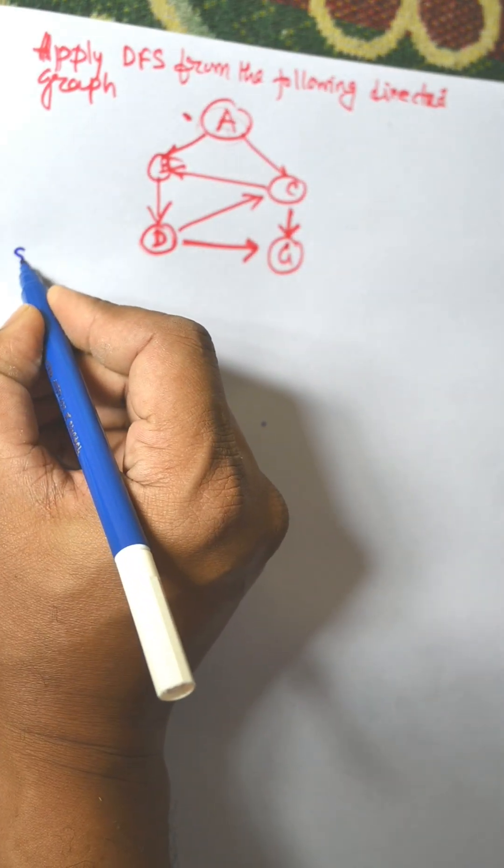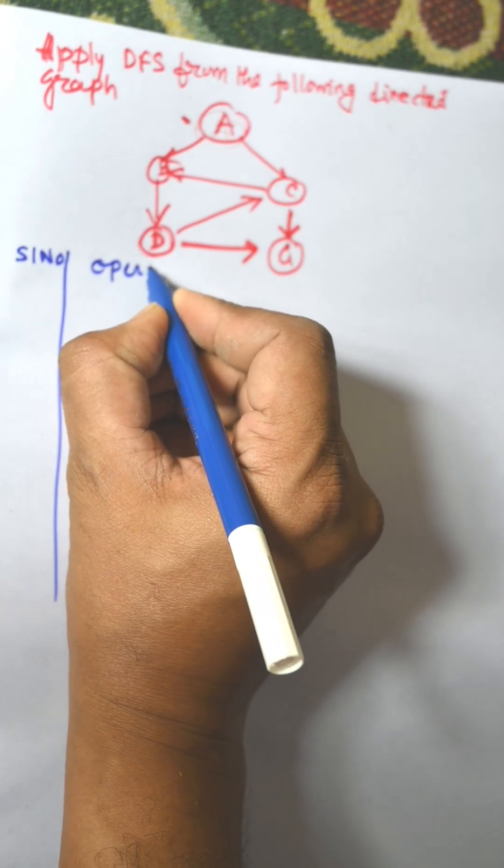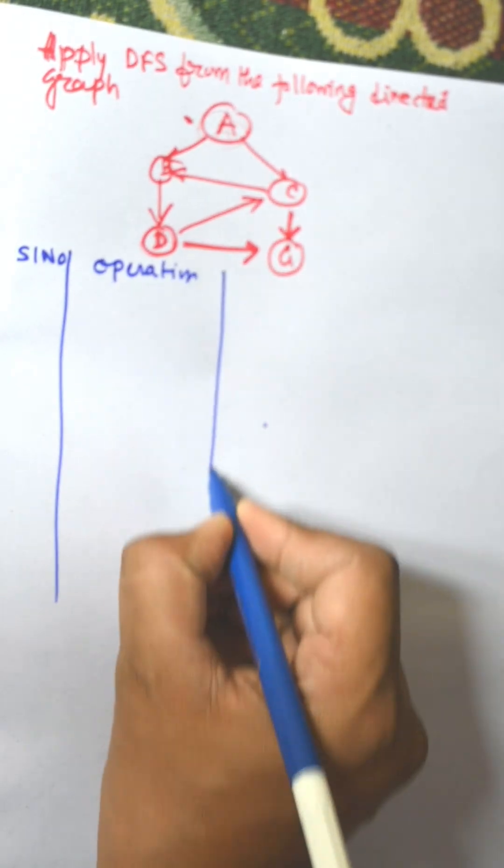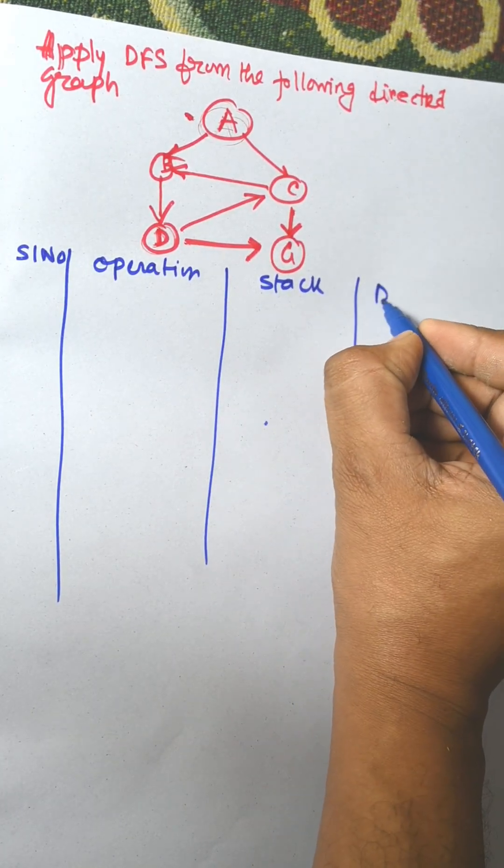Let us consider the solution. Initially this is a serial number, then one is operation, then one is stack, and finally the answer is DFS.